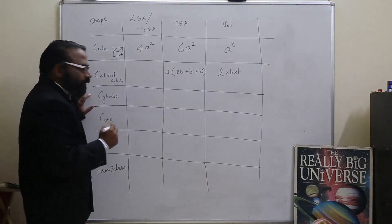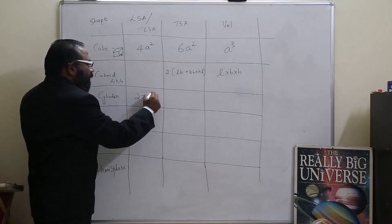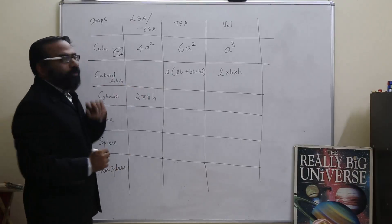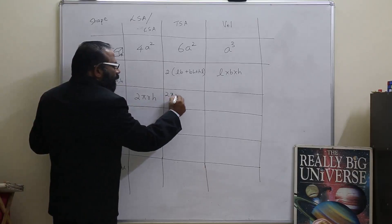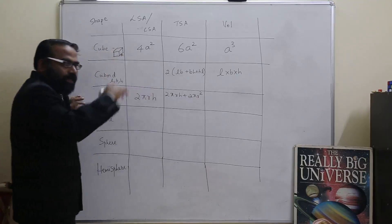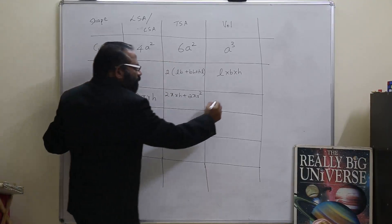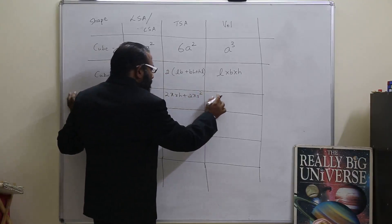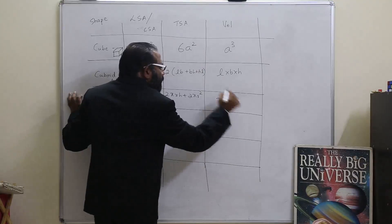What is the curved surface area of a cylinder? It is 2πrh. Total surface area is 2πrh plus 2πr squared, that includes the top and the bottom. The volume is πr squared h.